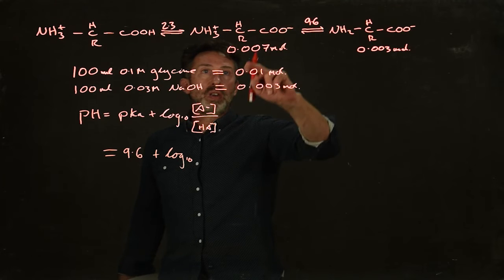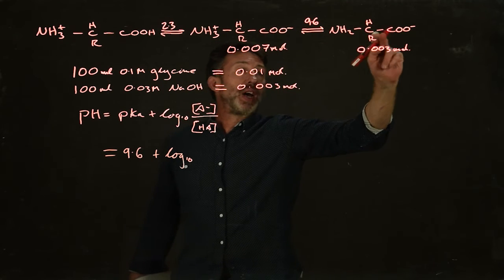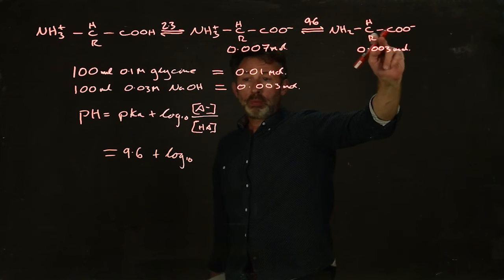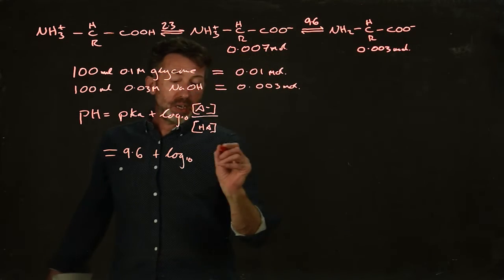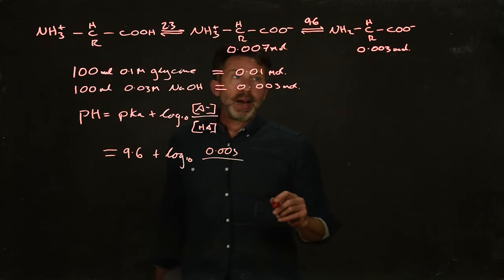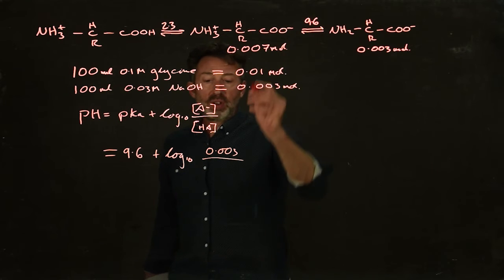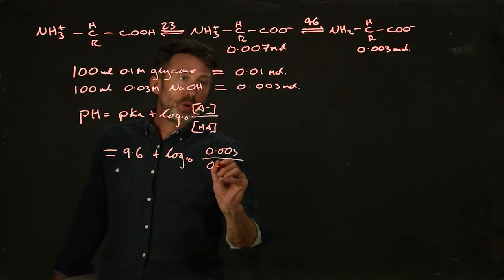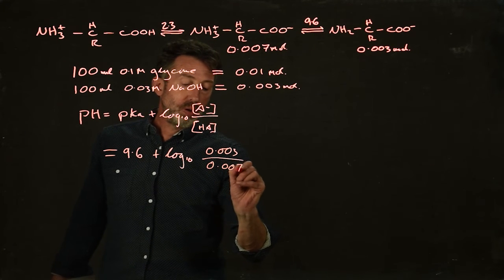A minus is the deprotonated form, so A minus is this form over here. That's 0.003. And HA is the protonated form, so it's this form here—0.007.